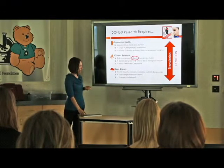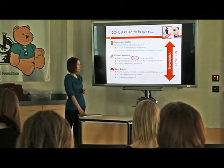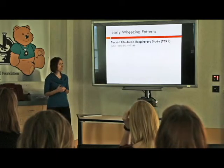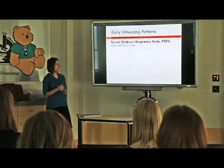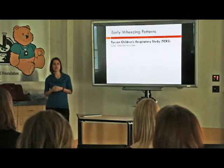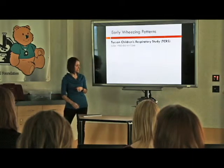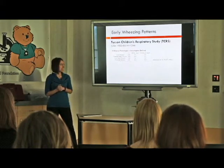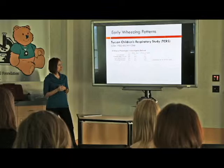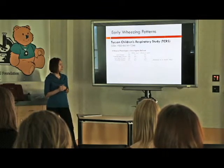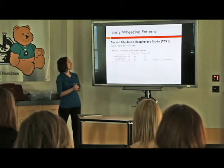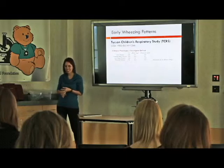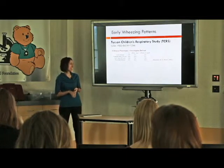Today I'll focus on cohort research. First I'll tell you about two cohorts that inspired this study. The Tucson Children's Respiratory Study was a cohort in the United States of about 1,200 children born in the 1980s. In a paper in the New England Journal of Medicine, this group was the first to identify four wheezing phenotypes in early life: never wheezing, transient early wheezing, late onset wheezing, and persistent wheezing. These were investigator-defined phenotypes.